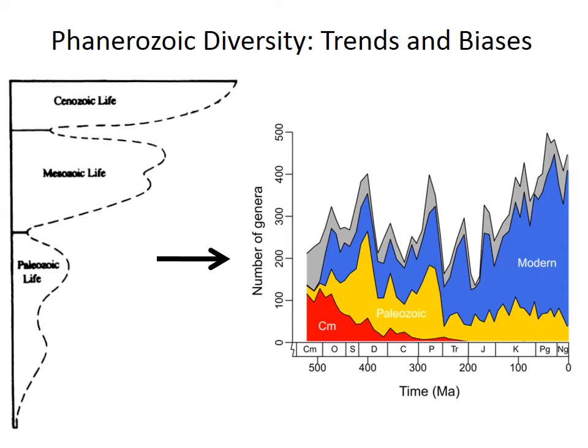Biodiversity is one of the more important research areas in biology and paleobiology, especially given concerns about wildlife conservation and related issues. These slides discuss what we know about long-term trends in marine biodiversity and outline some of the challenges associated with counting and quantifying diversity in the fossil record.